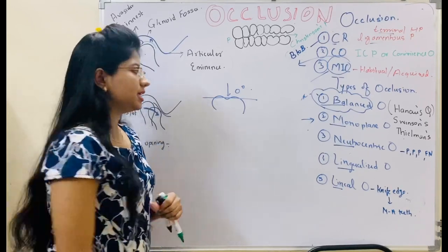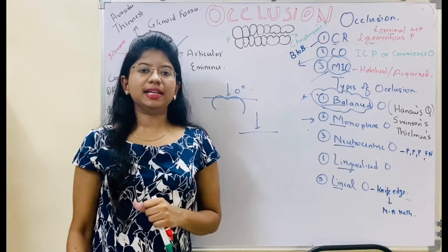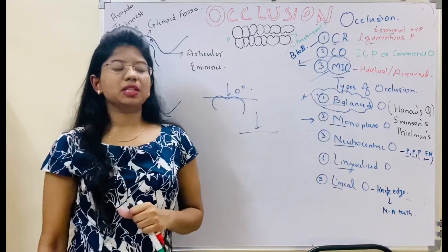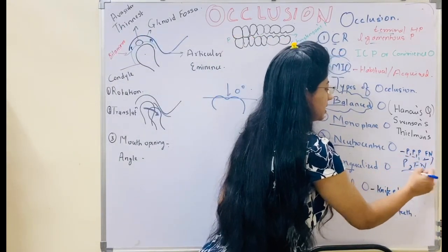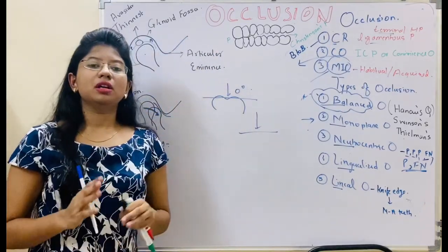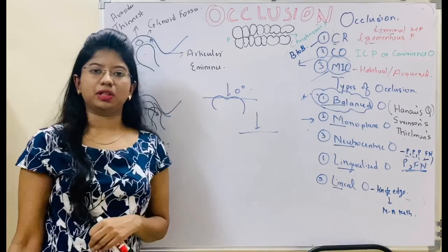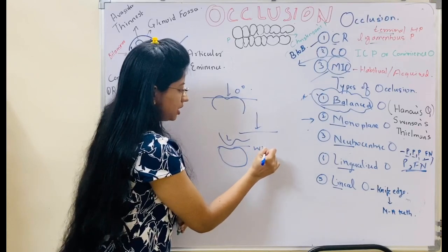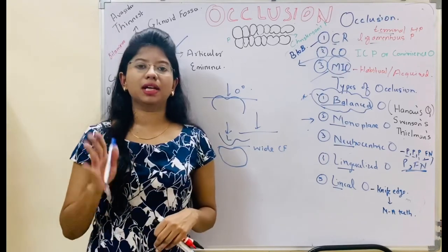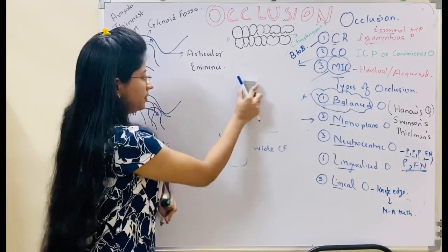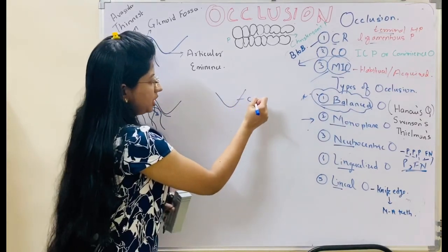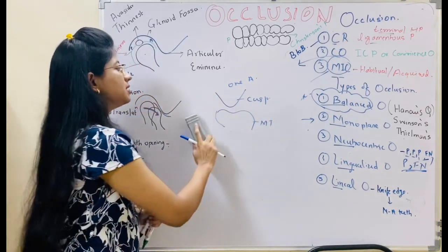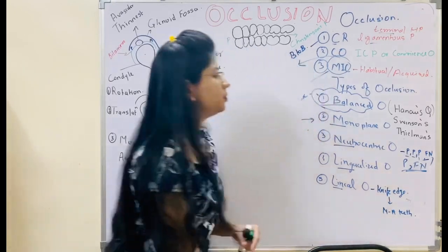Neutrocentric occlusion directs the force centralized to the basal seat area. For that, we need to maintain proportion, position, form, number and pressure — remembered as P3FM. Lingualized occlusion contacts the lingual cusp to the wider central fossa. Lineal occlusion has a knife-edged cusp on one arch while the opposing arch has 0-degree monoplane teeth.